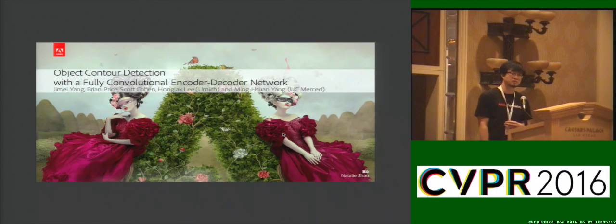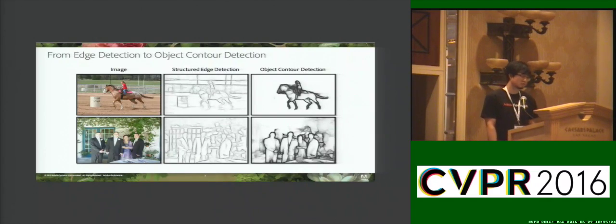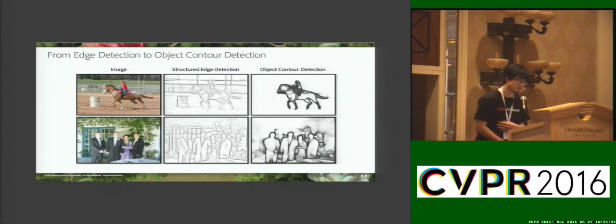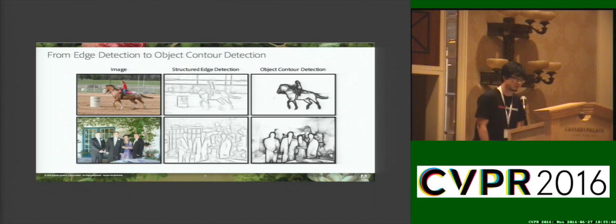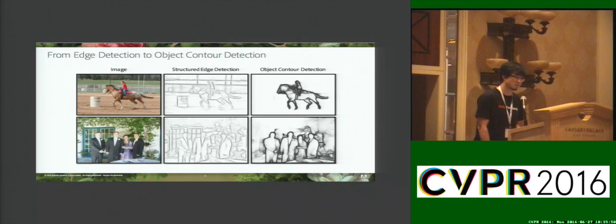Today I present our algorithm for detecting object contours. This is fully supervised. Object contour detection is different from classic edge detection. As seen in these two examples, in the middle we see the result from structured edge detection that responds to all the perceptual boundaries of these two images, but our object contour detector, as shown in the red panel, only responds to the designated object contours, such as a human and horse in these cases.